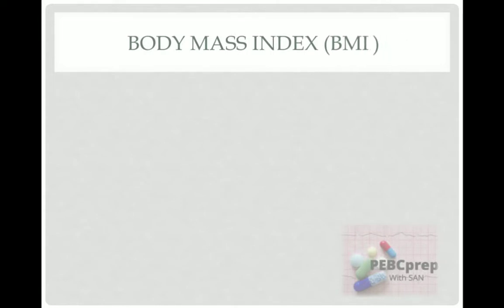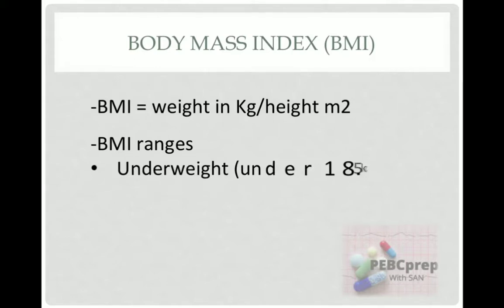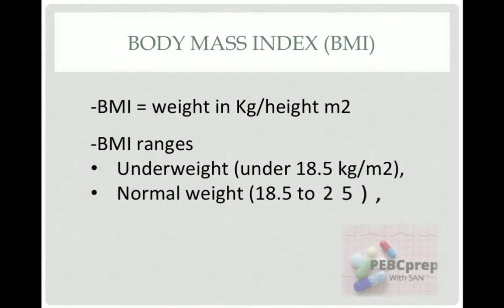In this lecture we will discuss two topics. The first is body mass index. Body mass index is simply weight in kilograms over height in meters squared — that is the formula you have to remember. Body mass index ranges: underweight if the patient is under 18.5 kg/m², and normal weight if it is between 18.5 to 25 kg/m².